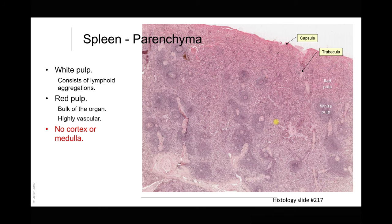An example of diffuse lymphoid tissue is seen in the esophagus, where lymphocytes and plasma cells are diffusely distributed in the mucosa beneath the non-keratinized stratified squamous epithelium. Another example is alveolar macrophages in the alveoli of the lung, which stain darkly because they have engulfed particulate matter such as dust, carbon particles, or red blood cells that enter the alveoli in heart failure. Their main function is to phagocytize infectious organisms.